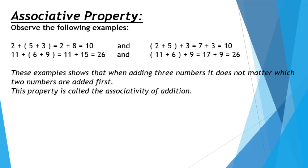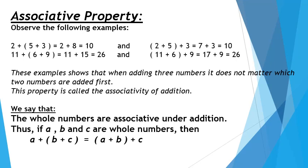According to the associative property of addition, the sum of three or more numbers remains the same regardless of how the numbers are grouped. The grouping is not affecting the answer. So this example shows that when adding three or more numbers, it does not matter which two numbers are added first. This property is called the associativity of addition.